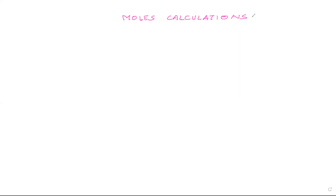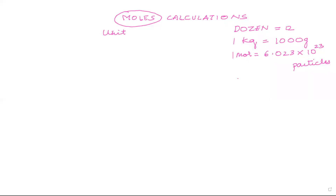This video is about moles calculations, which is a very important part of chemistry. First, let's understand what a mole is. A mole is basically a unit, just like a dozen — when you hear 'dozen,' the figure 12 comes to mind. Similarly, when you say one kg, that is associated with a thousand grams. A mole is also a unit like that.